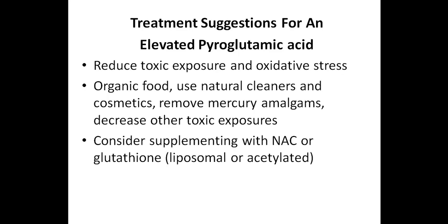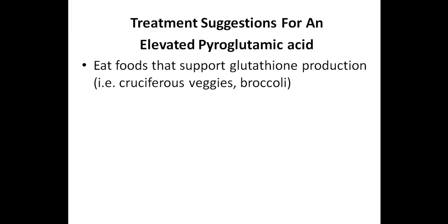Consider supplementing with NAC, which is N-acetylcysteine, or glutathione, preferably a liposomal or acetylated glutathione supplement. Selenium is a cofactor of glutathione production, so you might want to consider supplementing with selenium. Eat foods that support glutathione production. Cruciferous vegetables are a wonderful source of glutathione. So you can see broccoli here in parentheses, but other cruciferous vegetables as well, such as cauliflower, kale, cabbage, brussels sprouts.